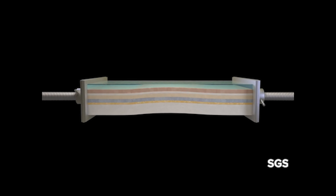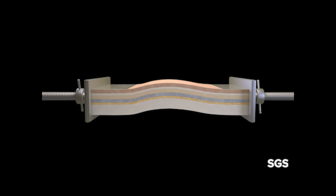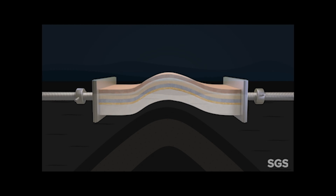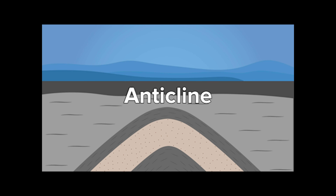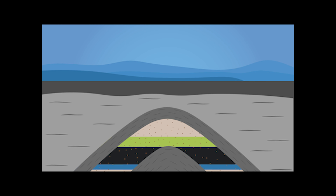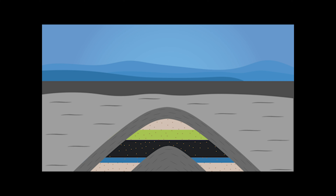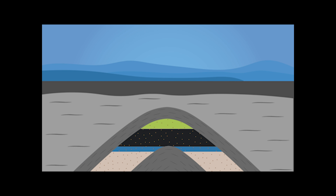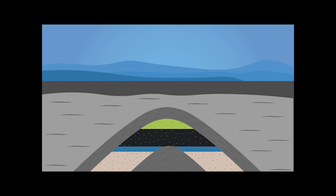One kind of geologic trap that leads to the formation of an oil reservoir is an anticline. Anticlinal traps are layers of rock that are folded in an arch where the rocks inside the arch are older than the rocks on the outside of the arch. If the younger rocks on the outside of the anticline are impermeable, they can trap oil and gas migrating through the older permeable rocks on the inside.